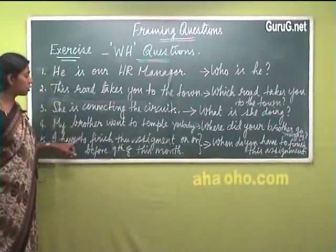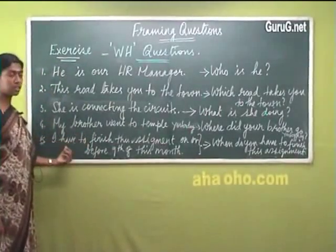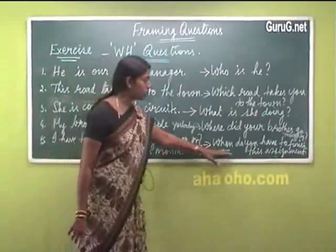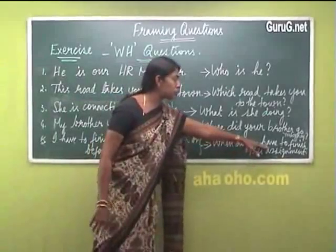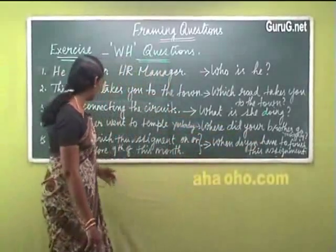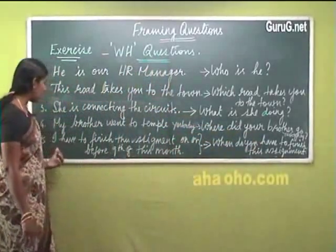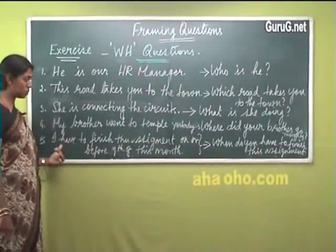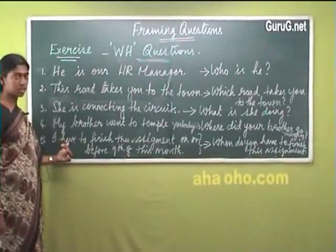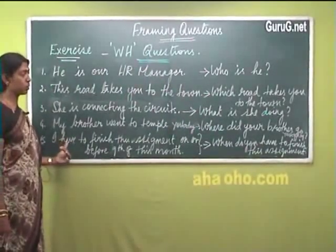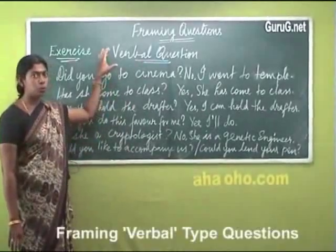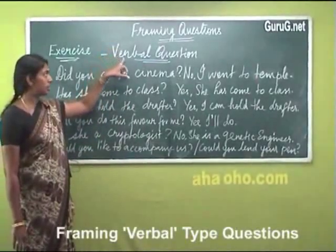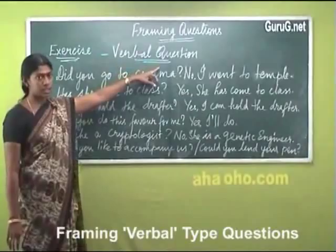If a perfect tense auxiliary is used — like 'have' in 'I have to finish' — check the question accordingly. However, in 'when do you have to finish,' the 'have' here functions as a root verb rather than a perfect tense auxiliary. Now we move on to the second type of framing questions: verbal questions.